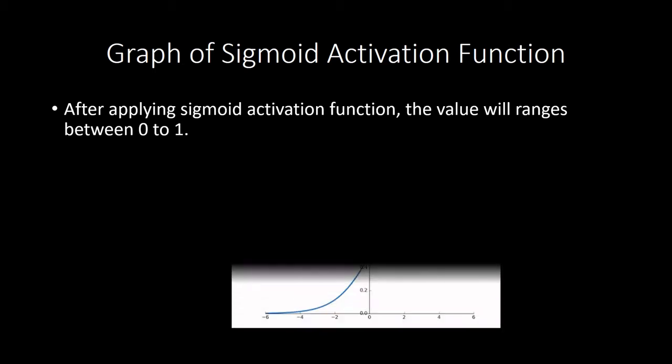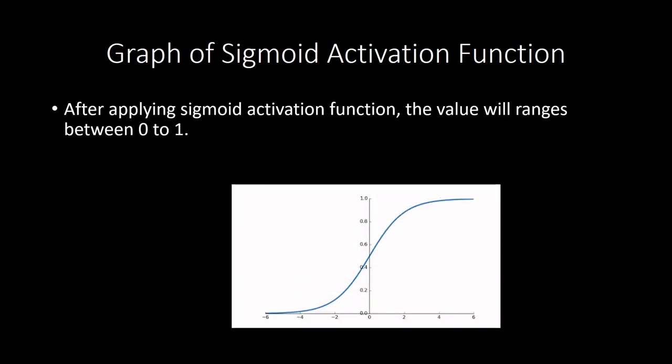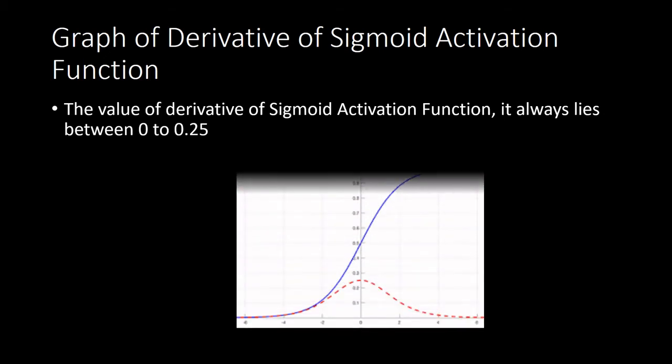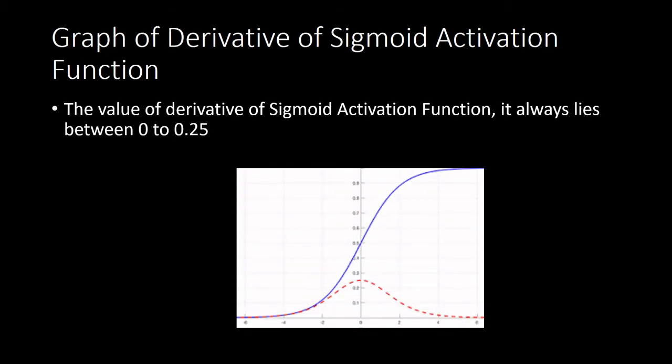As you can see in the picture. Now we should also know the derivative of sigmoid — if we take the derivative, the range will lie from 0 to 0.25. In the picture, the red line shows the same.